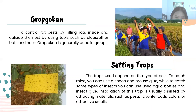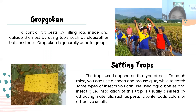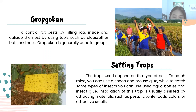The next mechanical method is grobyokan: controlling rats by killing them inside and outside the nest using tools such as clubs or bats. Grobyokan is generally done in groups. Then there is setting traps — the trap type depends on the kind of pest. To catch mice, you can use a spring trap or mouse glue, while to catch some types of insects you can use an aqua bottle and insect glue. Installation of these traps is usually assisted by attracting materials such as the pest's favorite foods, color, or attractive smells.